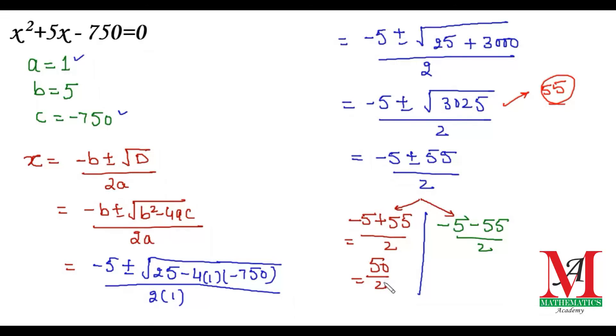On simplification, the first: 55 - 5 = 50, divided by 2, gives 25. In the second case, -5 - 55 = -60, divided by 2, gives -30. As we know that speed cannot be negative, x cannot be -30. Therefore, the original speed of the train is 25 km/hr.